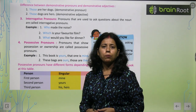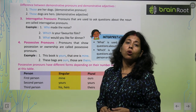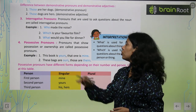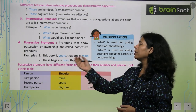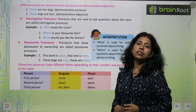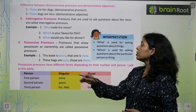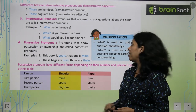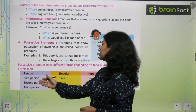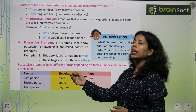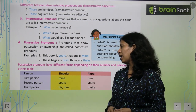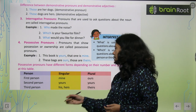Possessive Pronouns — pronouns that show possession or ownership are called possessive pronouns. Examples: This is yours. That one is mine. These bags are ours. Those are theirs. Possessive pronouns have different forms depending on their number and person. First person: mine (singular), ours (plural). Second person: yours (singular and plural). Third person: his, her, or theirs.